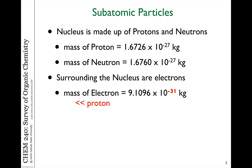Protons and neutrons have about the same mass — about 1.6 times 10 to the minus 27 kilograms. That's pretty small, but it makes up the bulk of the mass of an atom. The mass of an electron is 10 to the minus 31 kilograms, so it is significantly less than protons and neutrons. So when we look at atomic mass, we're talking mostly about the mass of the protons and neutrons.